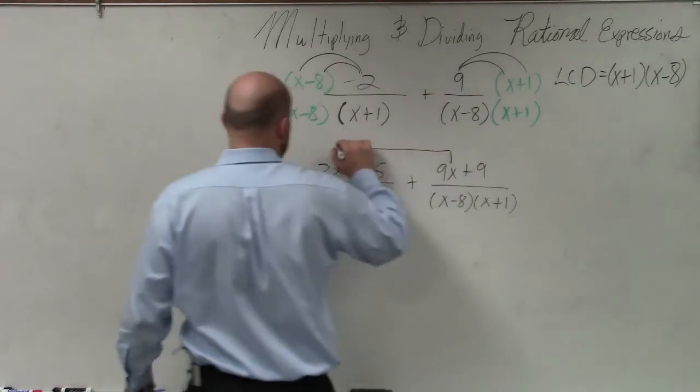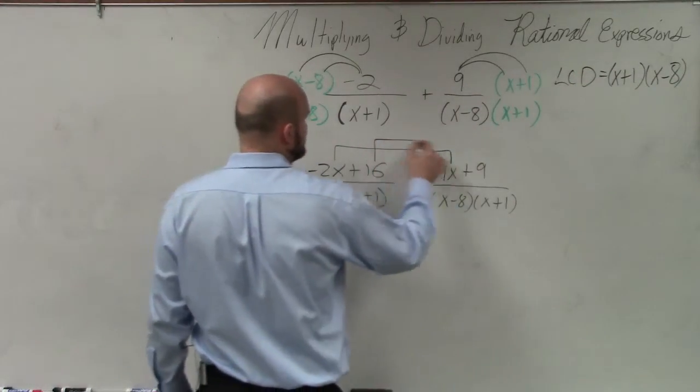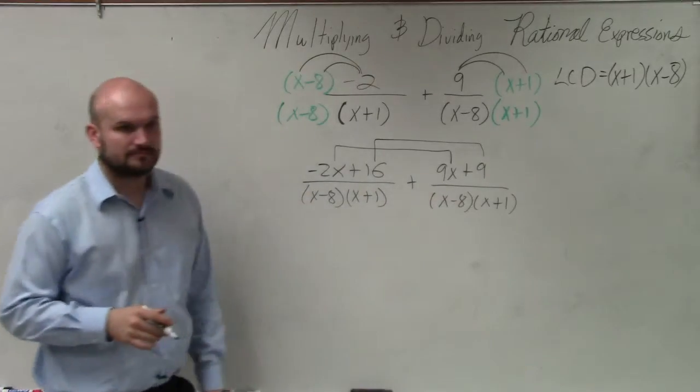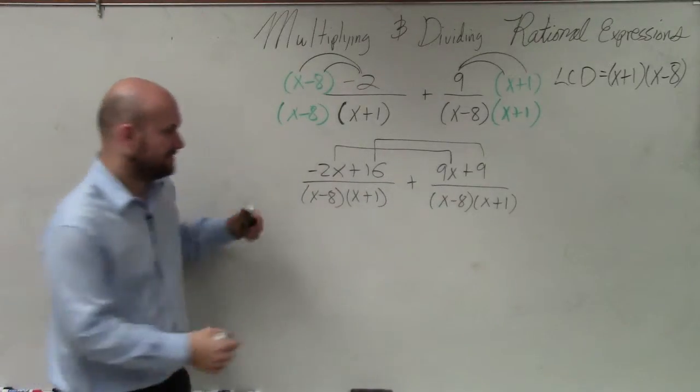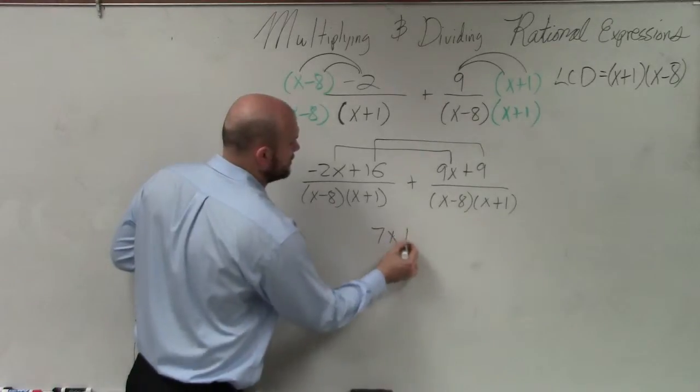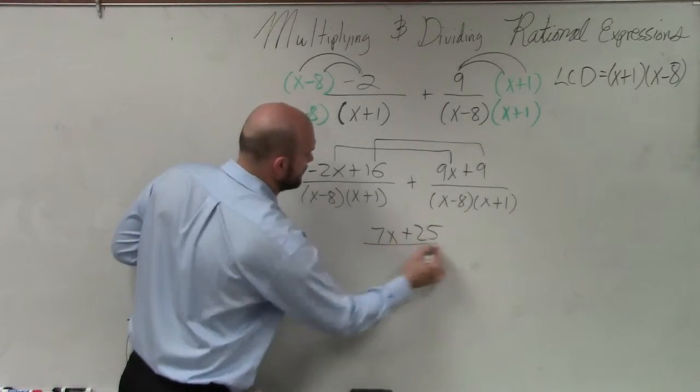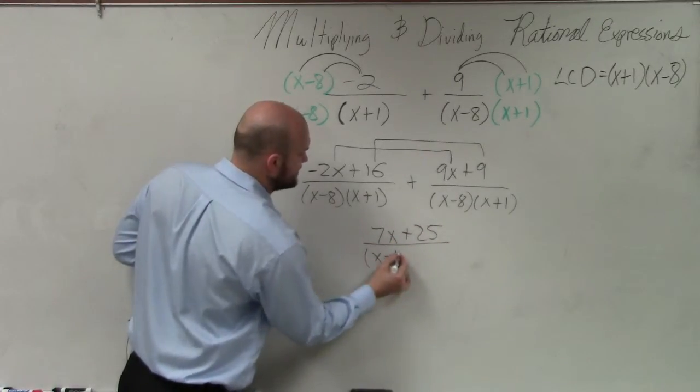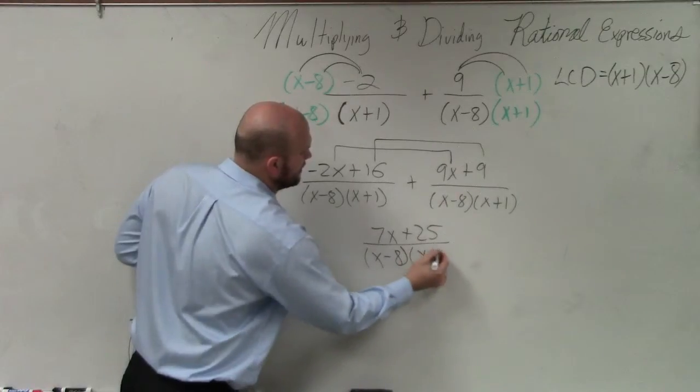So I'm just going to combine 9x and negative 2x, 16, and 9. So this becomes 7x plus 25 all over x minus 8 times x plus 1.